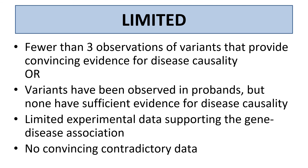For gene disease associations with limited evidence to support a causal role for this gene in this disease, there are typically fewer than three observations of variants that provide convincing evidence for disease causality, or variants have been considered in probands but none have sufficient evidence for disease causality, and there is limited experimental data supporting this gene disease association.